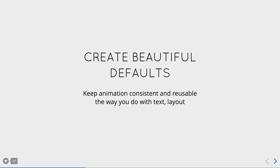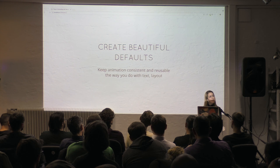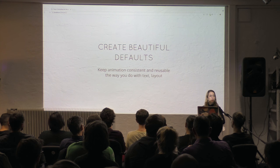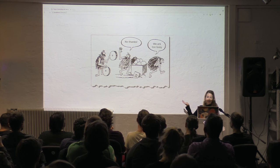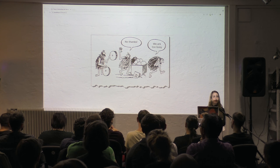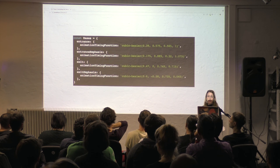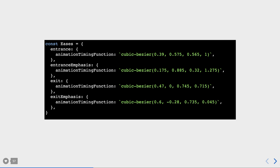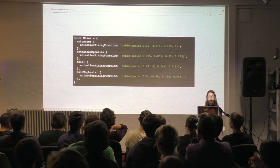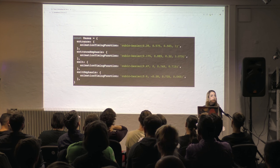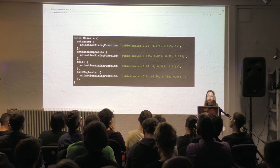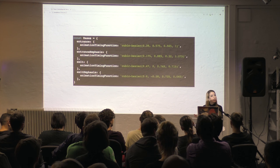We already build apps with beautiful defaults for text and layout, using props all the time — but we don't typically do it with animation. We do a lot of reinventing the wheel when it comes to animation, which makes it much harder to put into production sites. One way to fix this is to create beautiful defaults for animation. We can create defaults for easing — entrance, exit, entrance emphasis for success states, and exit emphasis — so that you get a similar feeling across your site. You never have to remember it again; you plug into entrance, you plug into exit, and all your eases stay totally consistent across the entire site.